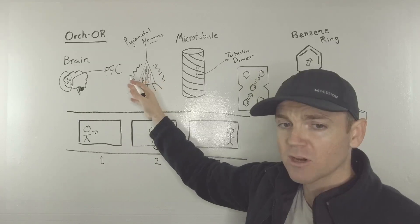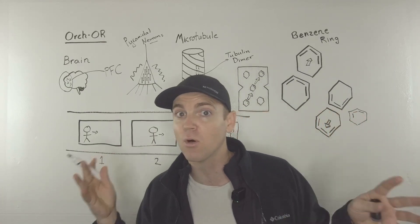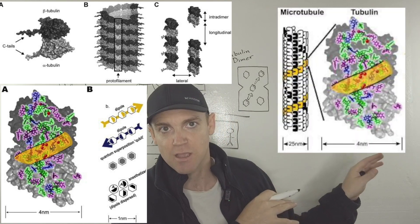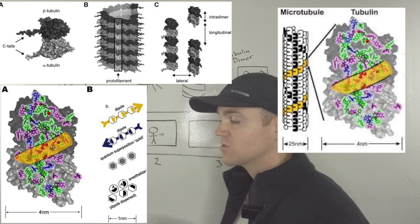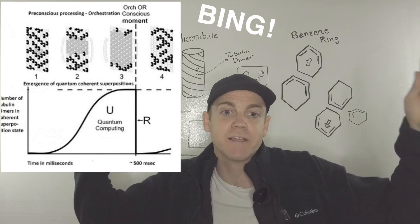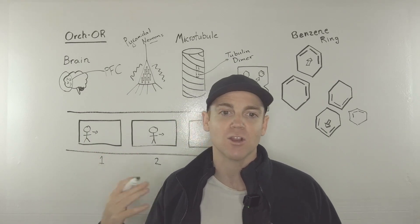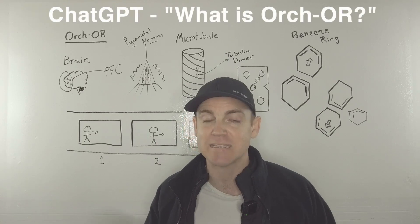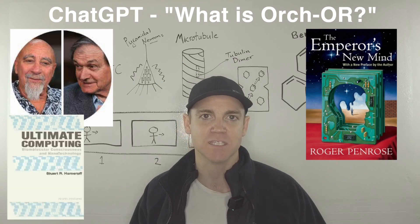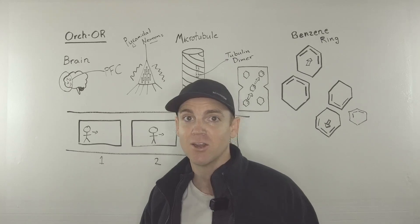You've got pyramidal neurons — we know that. You've got microtubules, tubulin dimers, and aromatic benzene rings, highly polarized and oriented specifically next to each other in this fashion. This can potentially give rise to a sequence of frames in these conscious collapse events. That's a quick explanation of Orch-OR. If you want to learn more, I highly encourage you to Google it or ask ChatGPT what Orch-OR is. I hope that's been helpful — I'll see you maybe on another one. Thanks, bye-bye.